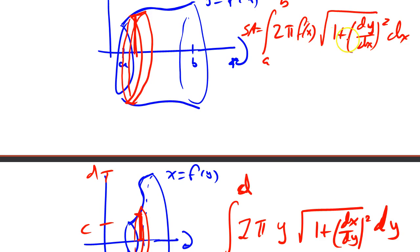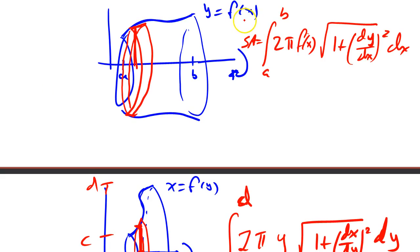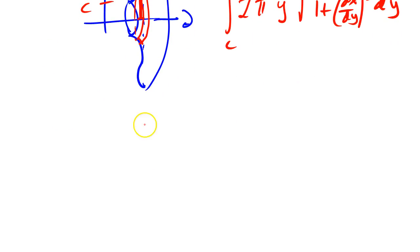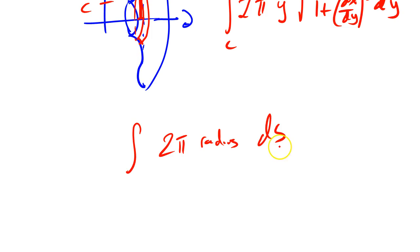These two integrals — one with everything in terms of x, one with everything in terms of y — are really the same thing: 2π times a y value times a bit of arc length. In general, calculating the surface area of a revolution needs an integral of 2π times a radius times ds. Make your choice: do you want to calculate the arc length in terms of x or in terms of y? Once you make that choice, you have to write the radius and the limits of integration in terms of that same variable.